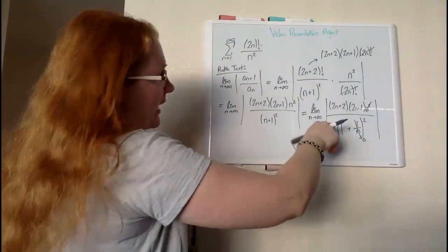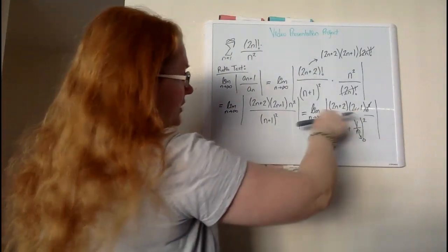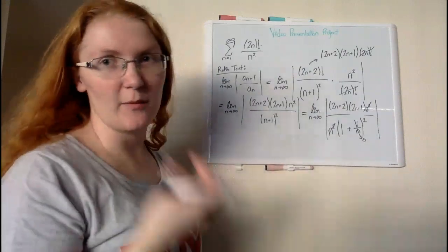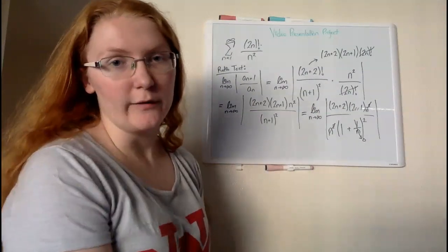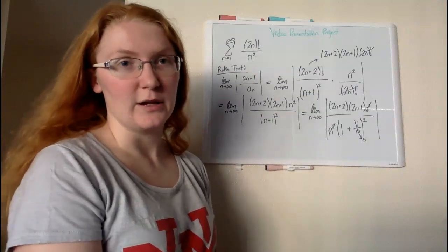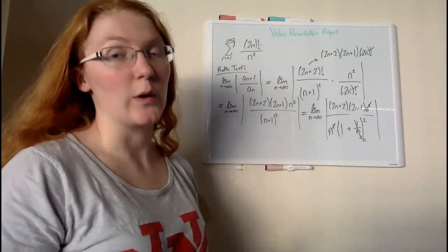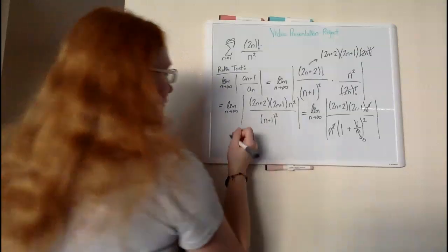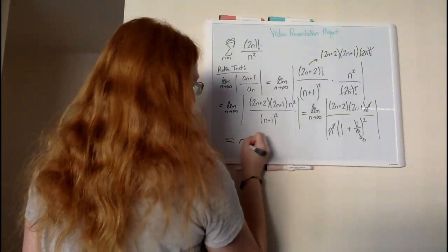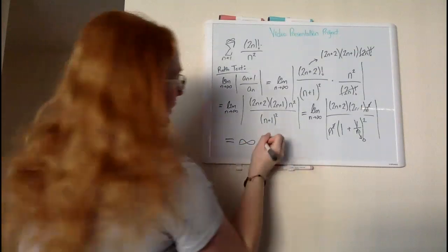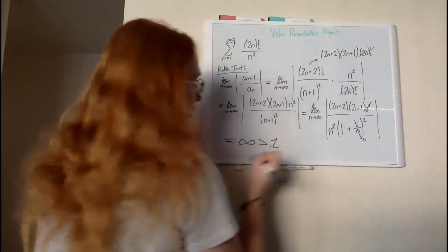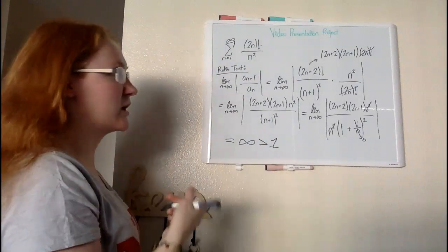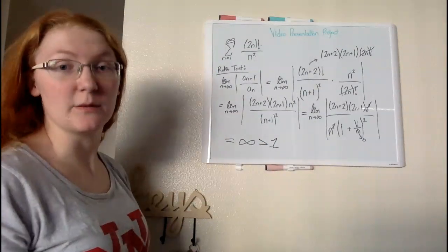That leaves only our 1 squared, or just 1. Now when we look at it, it's just going to be the two terms up here — 2n plus 2 over 2n plus 1 — and when we multiply them, it's just going to go on indefinitely, approaching infinity because it continuously grows. There's nothing that's going to cap this limit. So therefore, our limit is going to be equal to infinity, which is greater than 1, and by our ratio test we can determine that this series is going to be divergent.